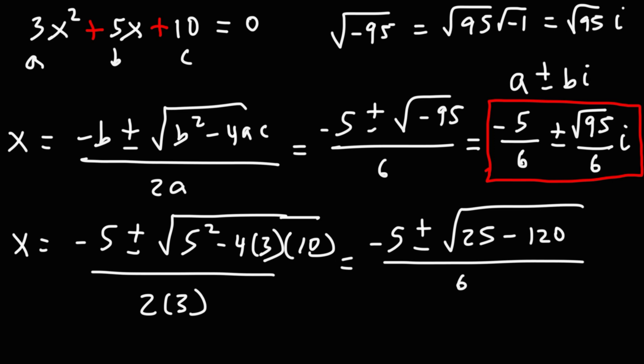That's the standard format when dealing with complex or imaginary numbers. That's basically how you can solve a quadratic equation that contains imaginary solutions. All you need to remember is that the square root of negative 1 is i. So if you have a negative sign within a square root with an even index number — like 2, 4, or 6 — you're dealing with imaginary numbers. Most of the time, the index will just be 2.